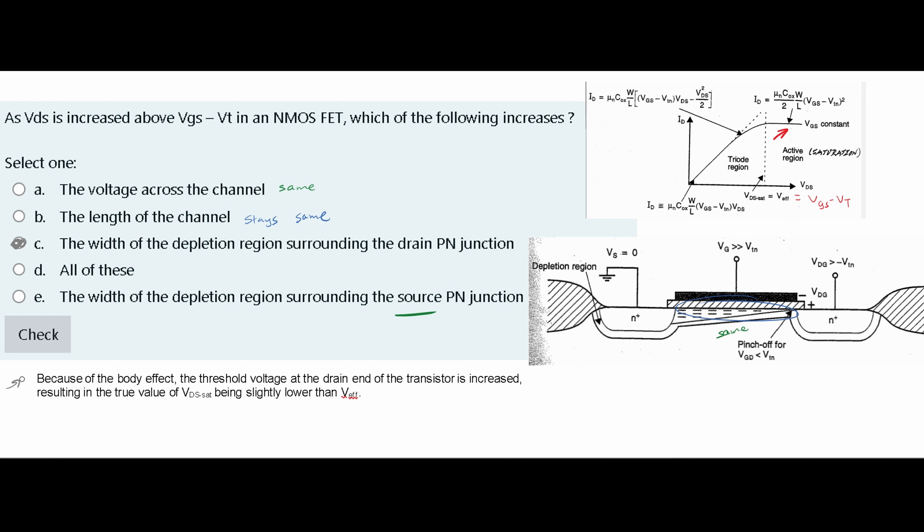We are asked the width of the depletion region surrounding the drain at our PN junction. Does this increase?